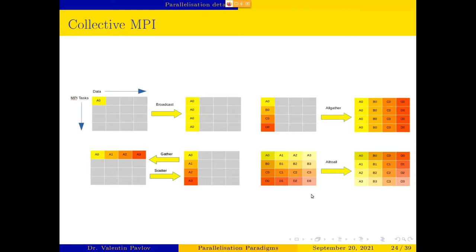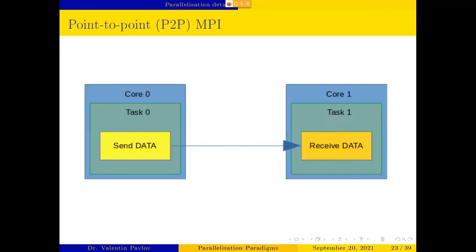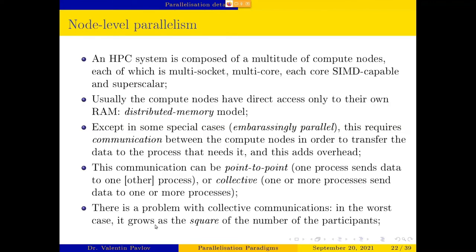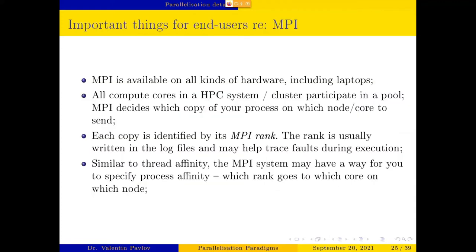All-to-all is the collective call that is expensive — it scales as the square of the number of communications. The number of messages grows as the square of the number of participants.